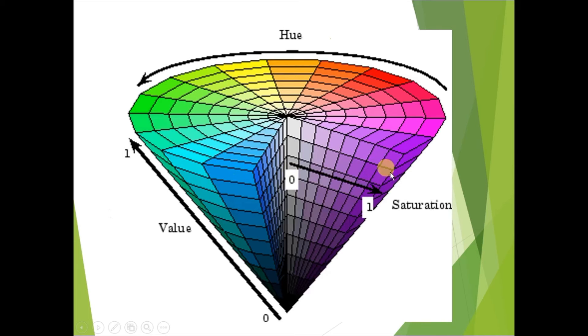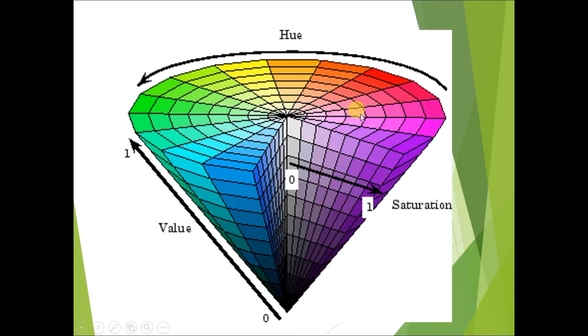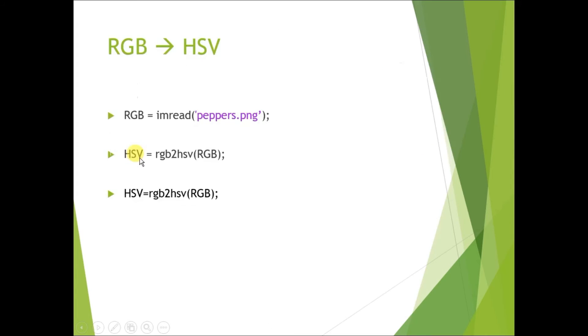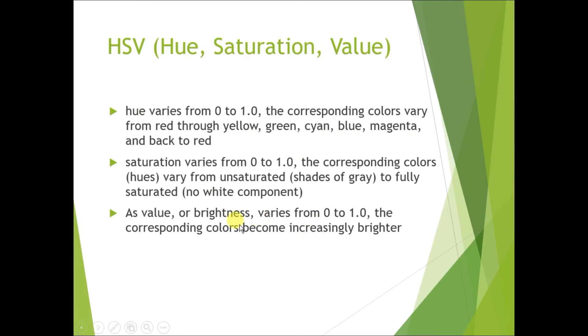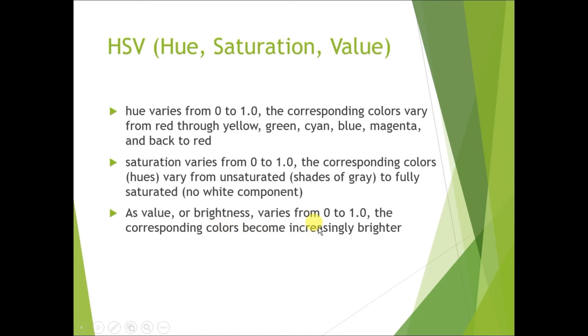So hue is color, second is saturation. Third parameter is value, which is nothing but brightness in that color. Brightness can vary from 0 to 1, where 0 corresponds to dark image and 1 corresponds to the brightest image. So this is a color space.